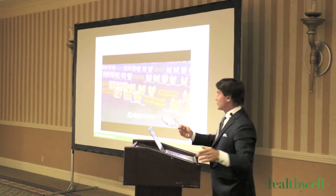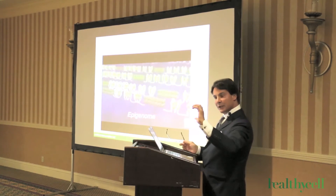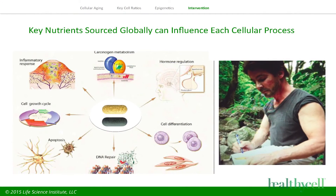Fatty acids work this way. By decreasing inflammation, they get into the gene and actually alter how genes get turned on and off. The key question that arises is: where do we get the right combinations of things and how do we know which ones to use?